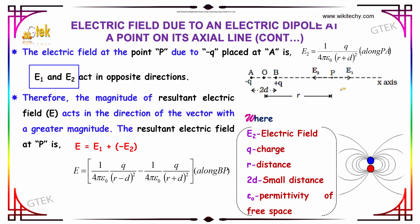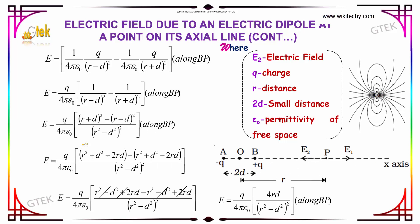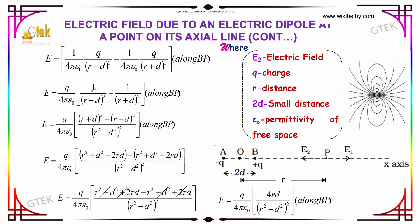From these two, E1 and E2 act in opposite directions. Therefore, in terms of magnitude, the resultant electric field E acts in the direction of the vector with greater magnitude. The resultant electric field at P is E equal to E1 minus E2. By substituting the values of E1 and E2, we get 1 over 4 pi epsilon naught into Q over R minus D squared, minus 1 over 4 pi epsilon naught into Q over R plus D squared, along BP.